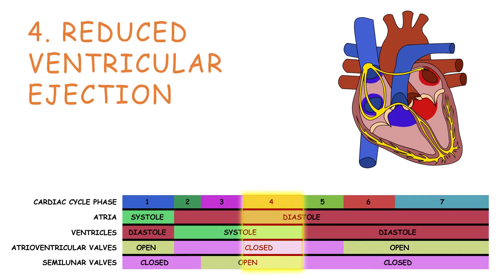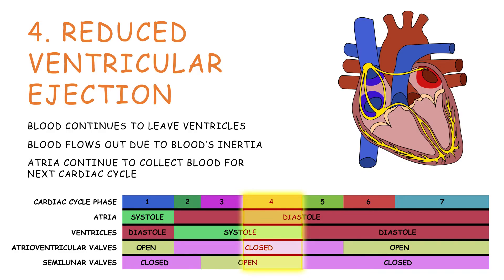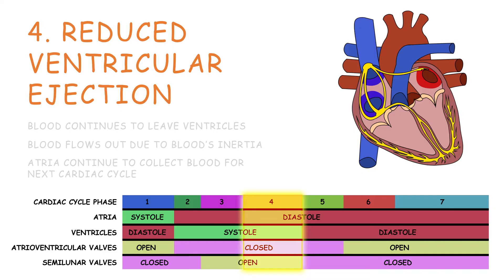Phase 4 is next, reduced ventricular ejection. Blood continues to leave the ventricles, but not because of ventricular contraction — the blood flows out due to the blood's inertia. The atria continue to collect blood for the next cardiac cycle.